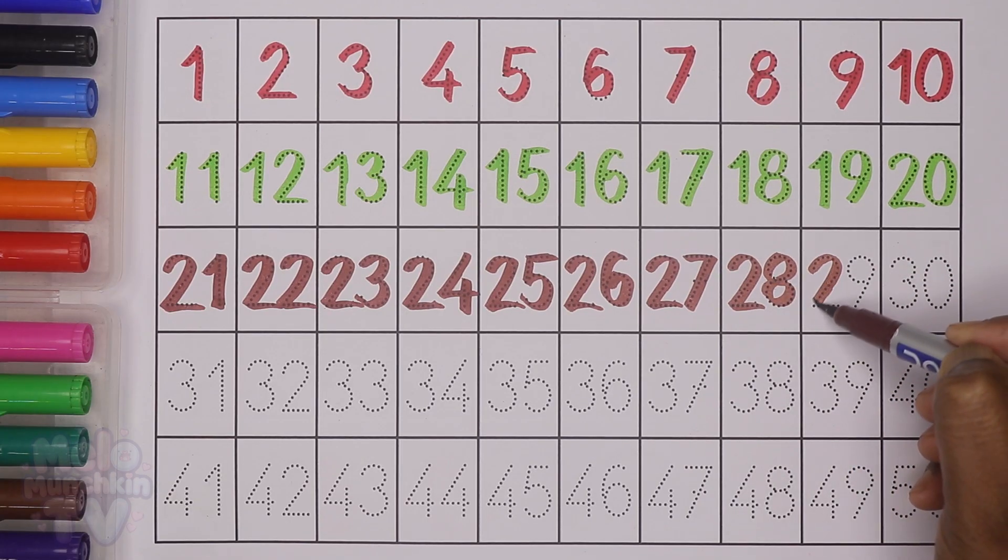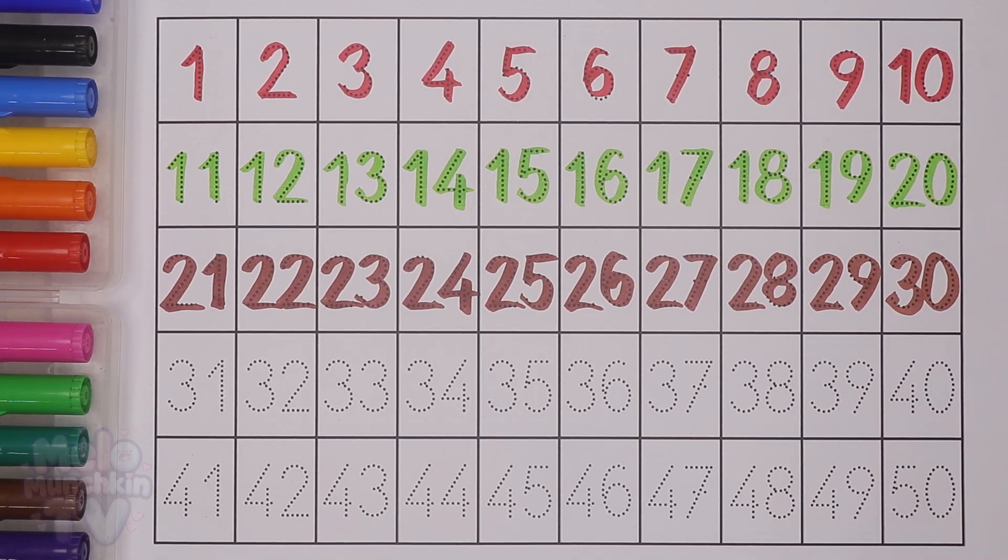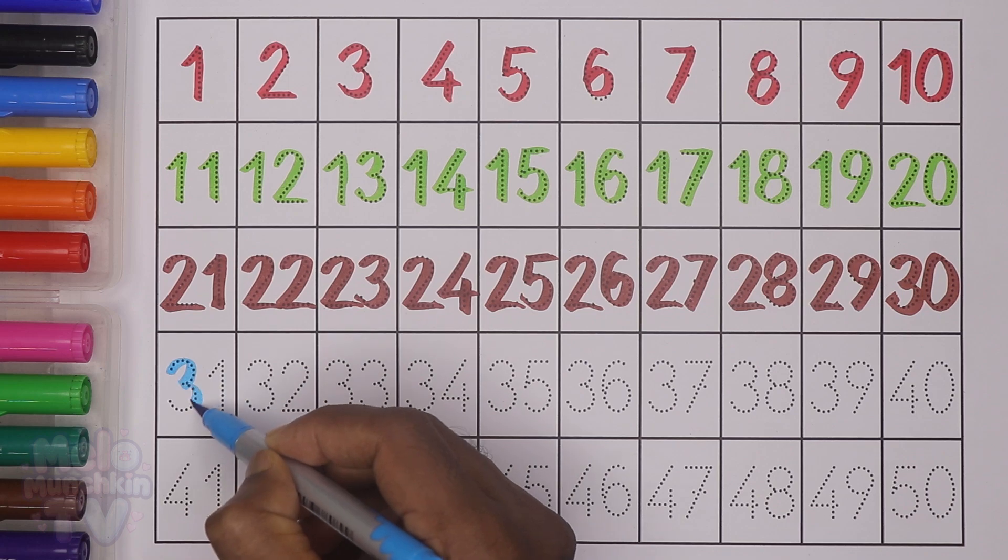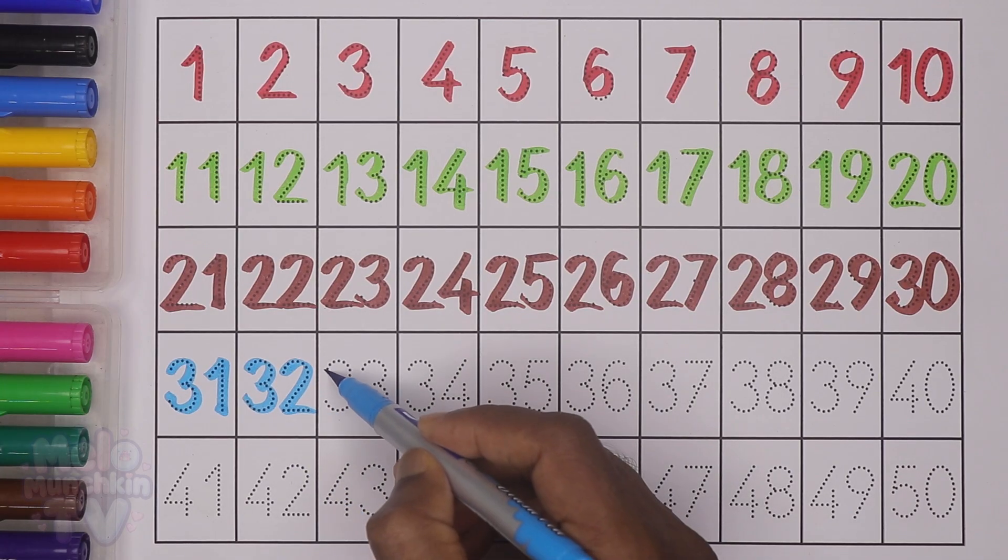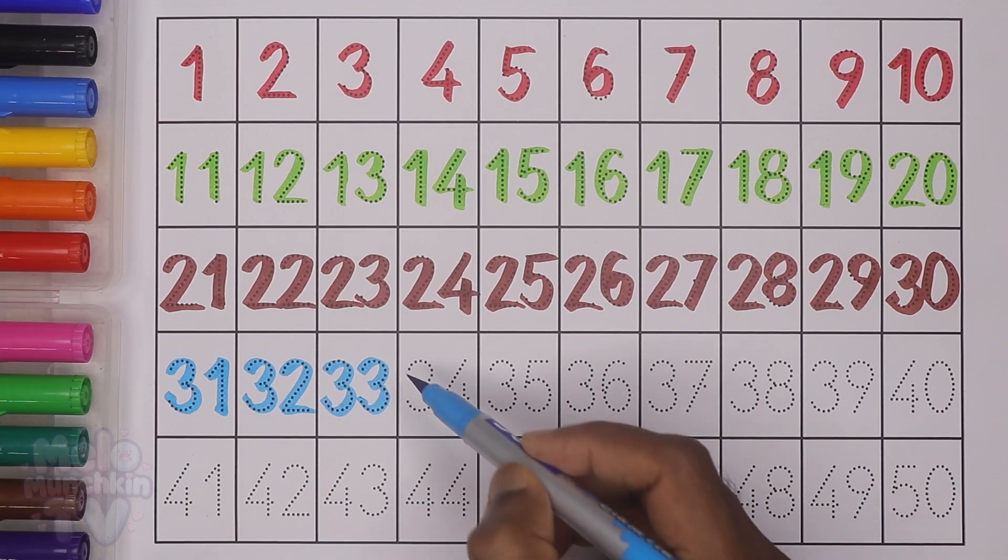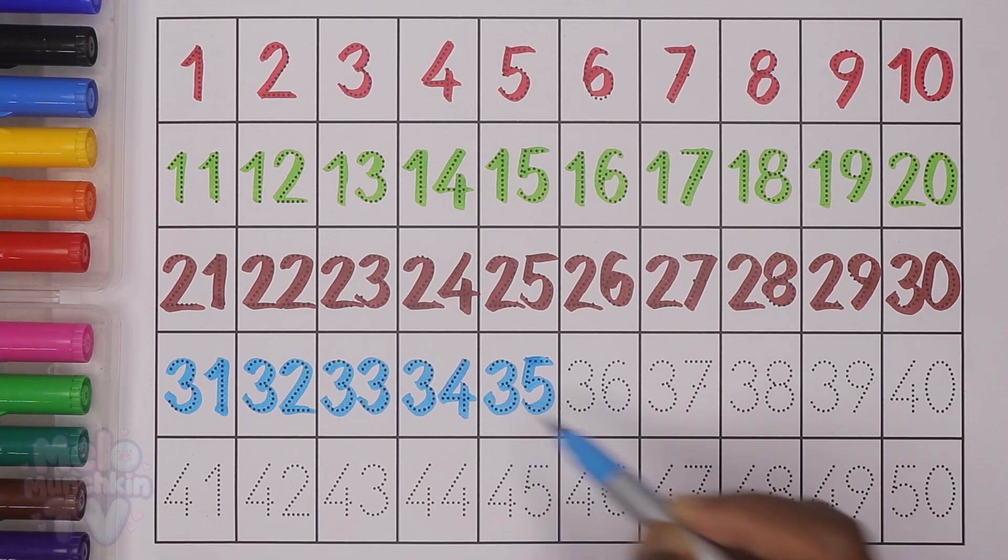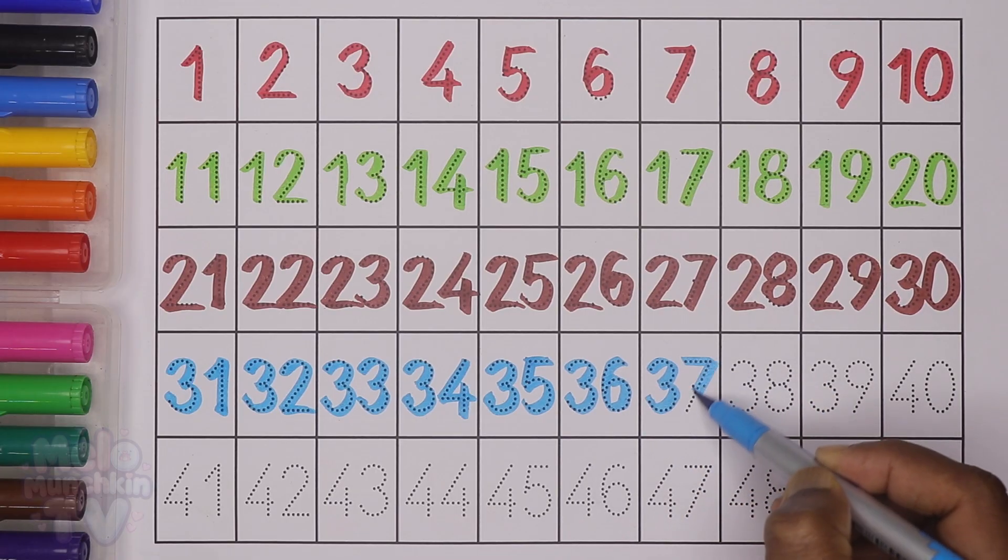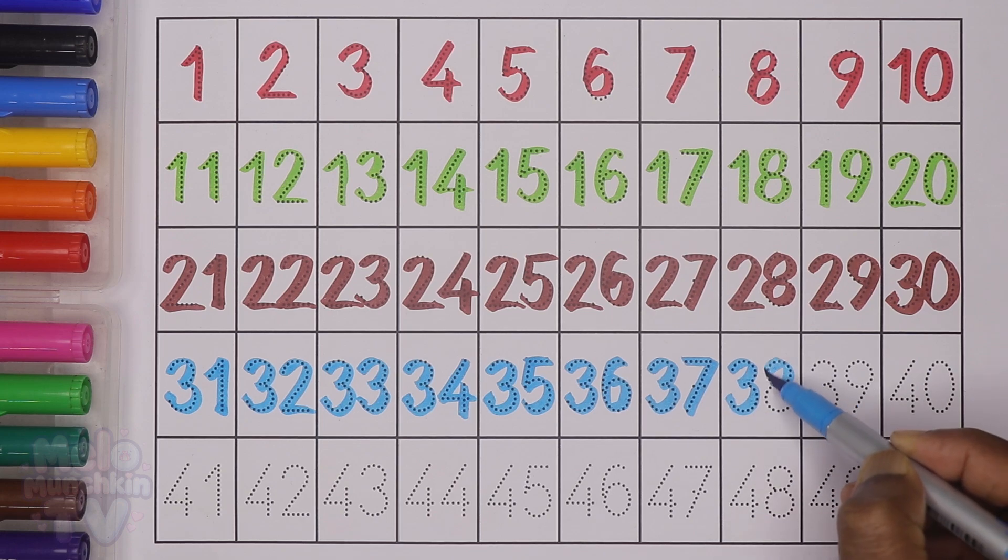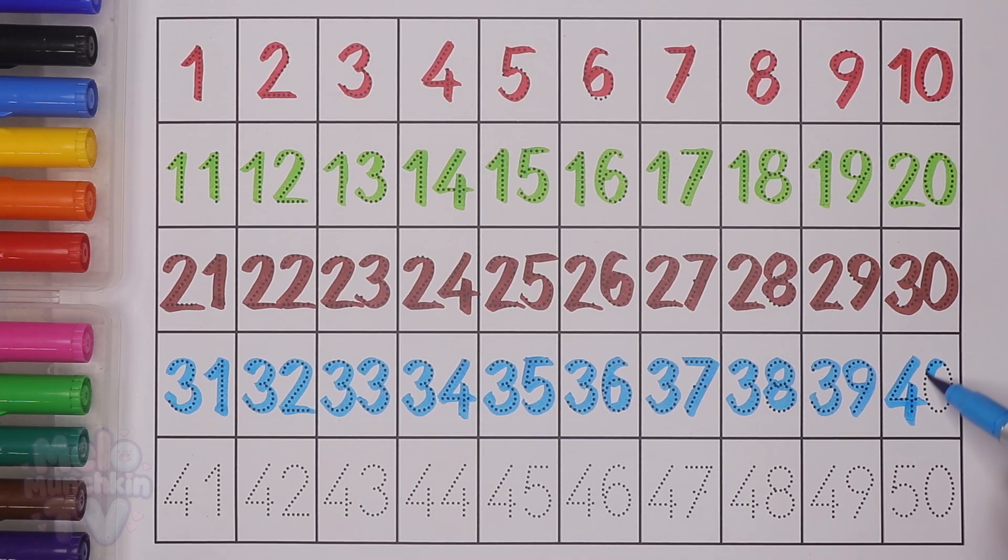Next I'll take blue color to write the fourth line. After 30: 31 thirty-one, 32 thirty-two, 33 thirty-three, 34 thirty-four, 35 thirty-five, 36 thirty-six, 37 thirty-seven, 38 thirty-eight, 39 thirty-nine, 40 forty.